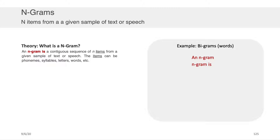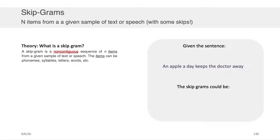Grams don't only refer to words — they could refer to characters or letters as well. So 'an_' is one trigram, 'n_' is another trigram, '_n-' is another trigram, and so on.